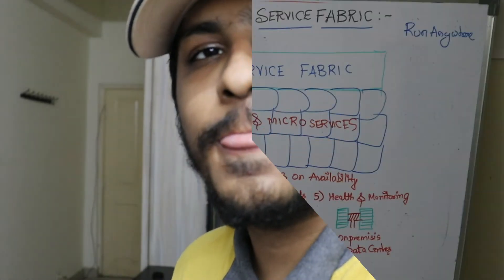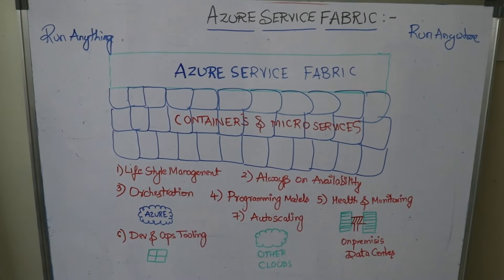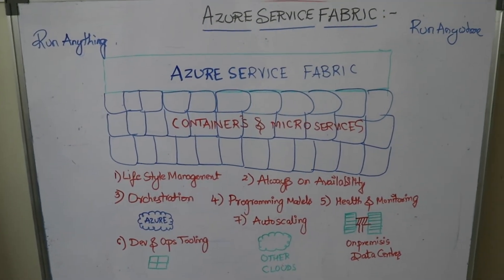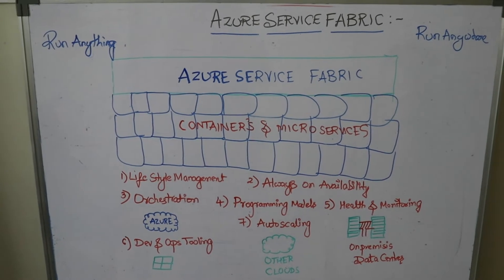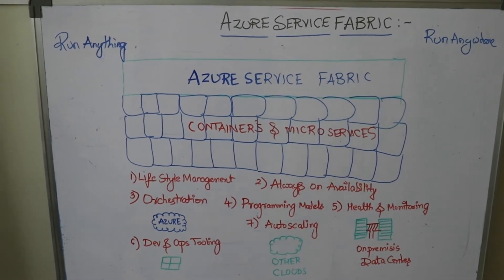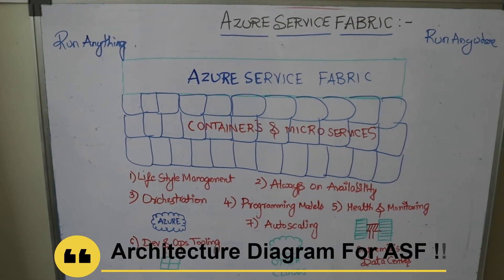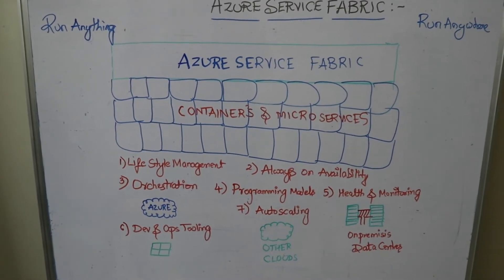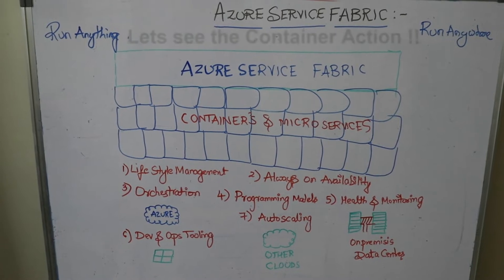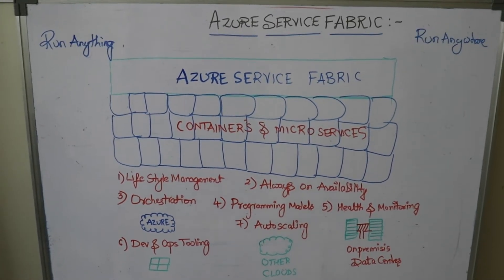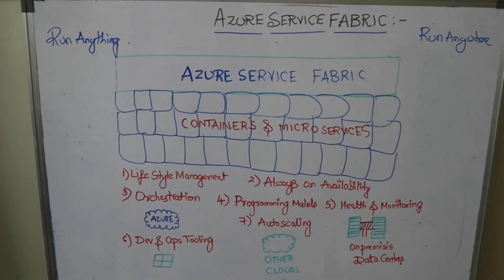Let's get into that whiteboard and we'll see the architectural diagram. We are back with the architectural diagram for Azure Service Fabric. If you see the Azure Service Fabric, you can see containers and microservices written, and also there's a top heading called Azure Service Fabric. Now let's see what containers do in Azure Service Fabric versus the virtual machines.